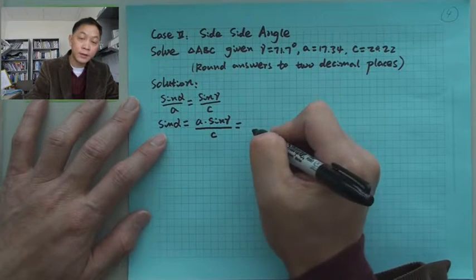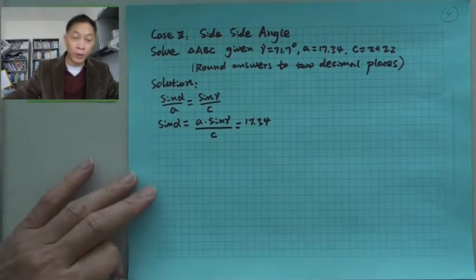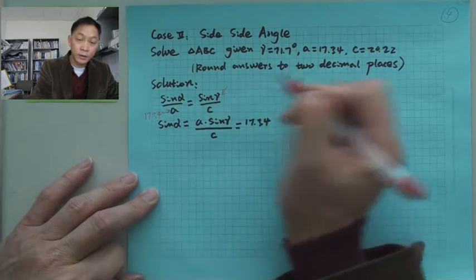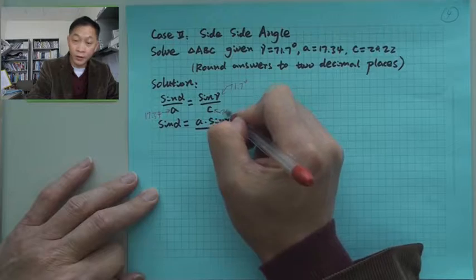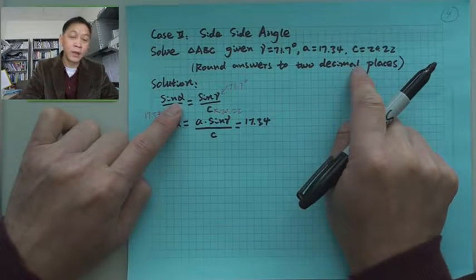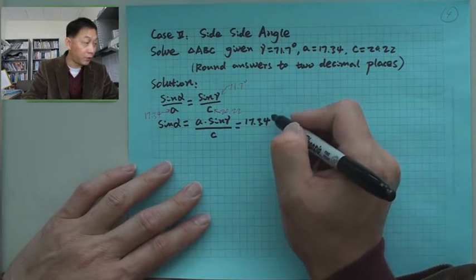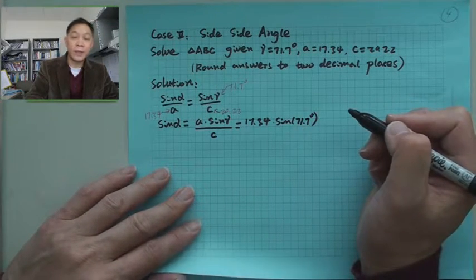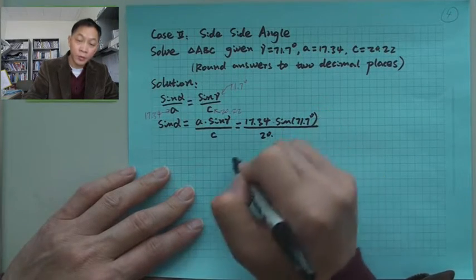What is our A? A is given 17.34. You may want to mark here 17.34. Gamma is 71.7 degrees, and C is then 20.22. So if you know the value, you then can find out sine alpha by cross multiplication. That's 17.34 times sine gamma is 71.7 degrees, and then divide it. Divided by C is 20.22.